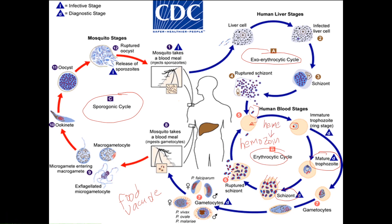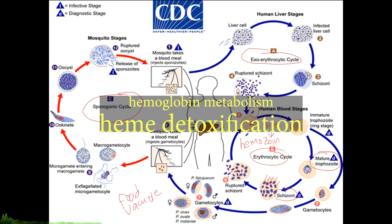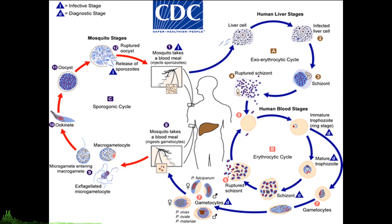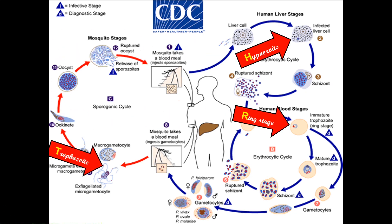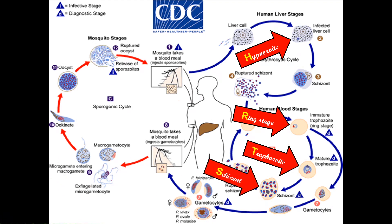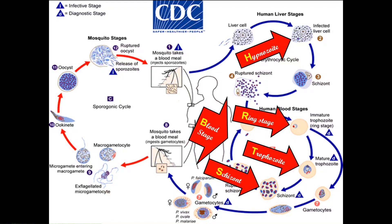Hemozoin is non-toxic, and this conversion of heme to hemozoin is called the heme detoxification process. This will play a big role in the pharmacologic activity of some antimalarial drugs, so please take note of the processes of hemoglobin metabolism and especially heme detoxification. It is also important to go back to the different life cycle stages: you have your hypnozoite, ring stage, trophozoite stage, schizont stage — and the ring, trophozoite, and schizont stages are all blanketed under the term 'blood stage.' You also have your gametocyte stage.